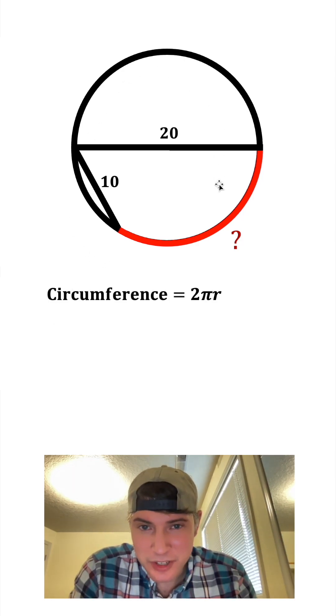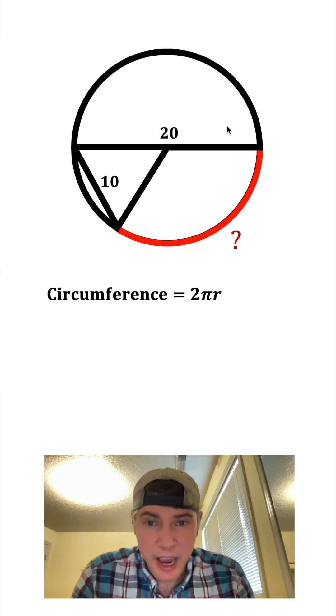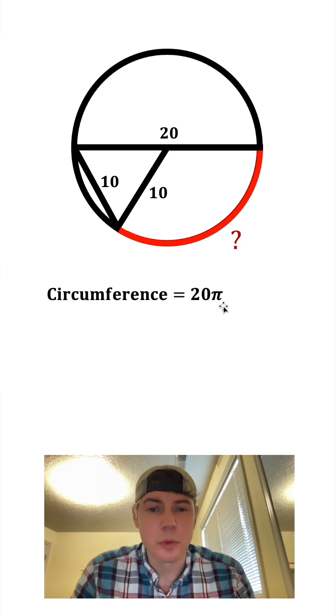First, let's find the circumference of the entire circle. That's going to be 2πr. r would be the radius, so we go from the center to the edge of the circle and it's going to be half of the diameter, so that'll be 10. We can plug in 10 for the radius and that gives us a circumference of 20π.